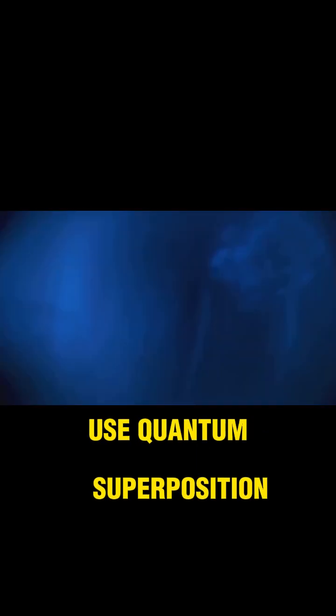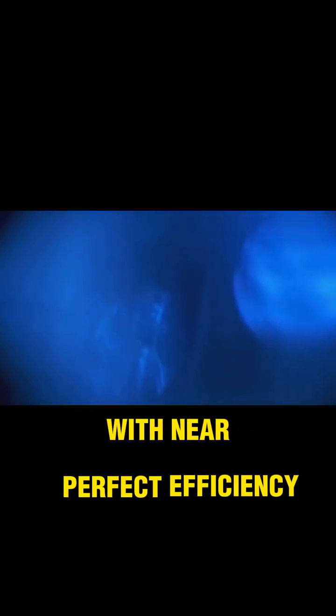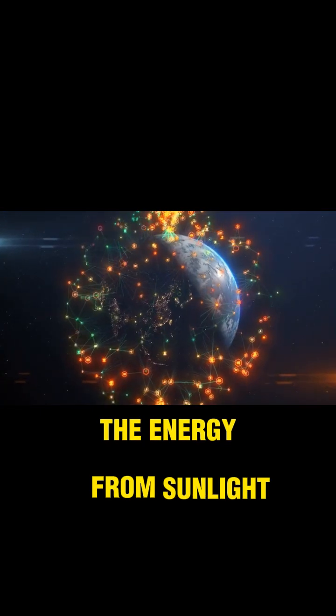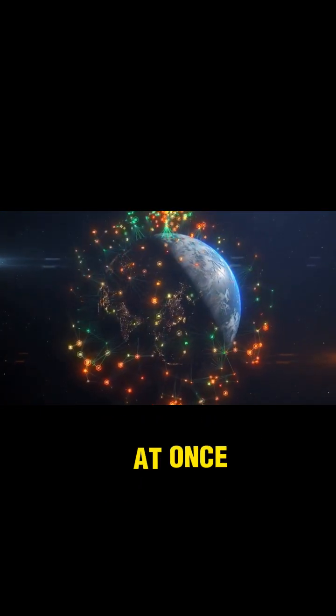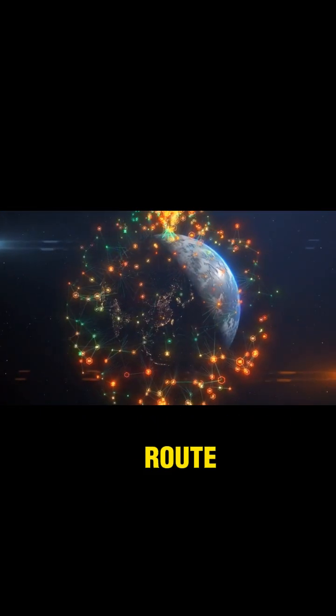Plants use quantum superposition to transfer energy with near-perfect efficiency. The energy from sunlight explores all possible paths at once, instantly finding the best route.